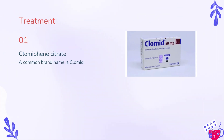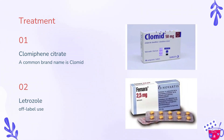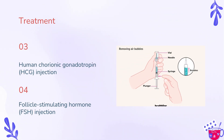Clomiphene citrate, CC, is often the first line of treatment for anovulation, with about an 80% success rate in helping you ovulate. A common brand name is Clomid. Letrozole, although an off-label use and not FDA-approved to treat anovulation, is recommended by some providers to induce ovulation instead of clomiphene citrate; the brand name is Femara. Human chorionic gonadotropin, HCG, injection causes your ovary to release an egg and is often taken with clomiphene citrate or letrozole. If your body isn't making enough FSH and other treatments haven't worked, your provider may prescribe a follicle-stimulating hormone, FSH, injection to help your ovary release an egg.